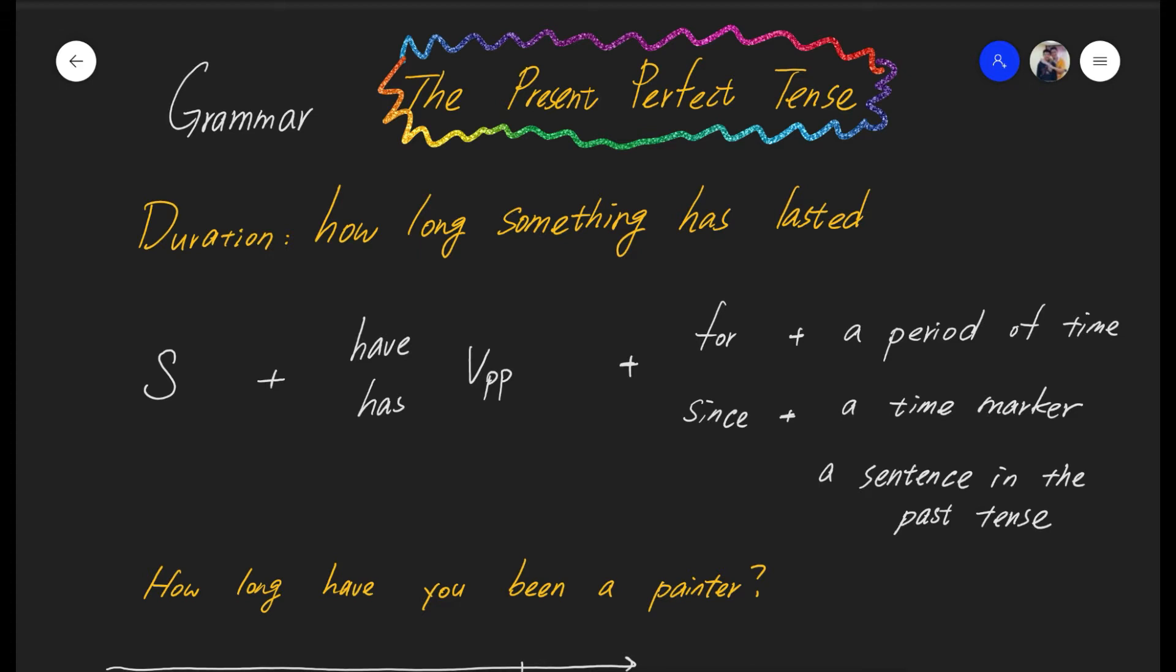Duration: how long something has lasted. If you want to talk about something that started sometime in the past and you just keep doing it, doing it, doing it up till now and has been for many years, many months, or even many days, then you have to use the present perfect tense.